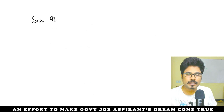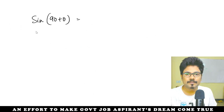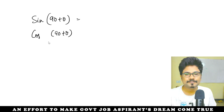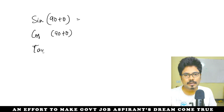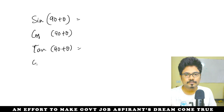Now applying this: sin(90 plus theta), cos(90 plus theta), tan(90 plus theta), cot(90 plus theta) — how do these change? We need to work through each one using the two rules.